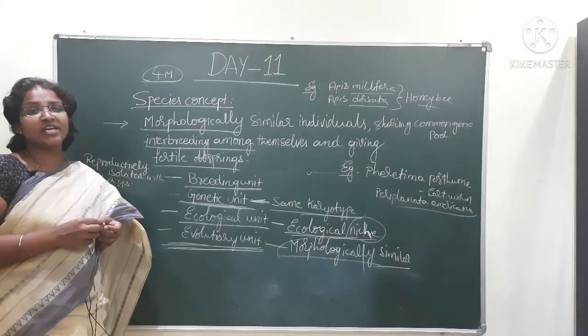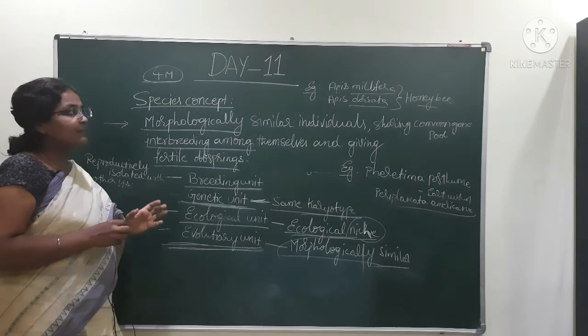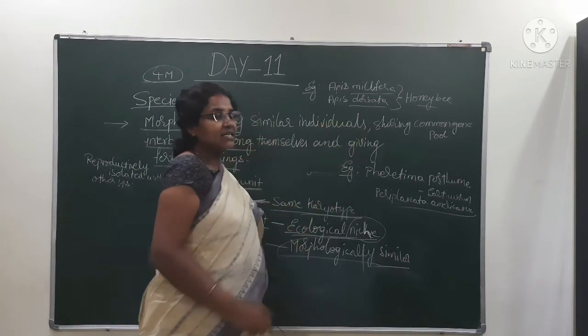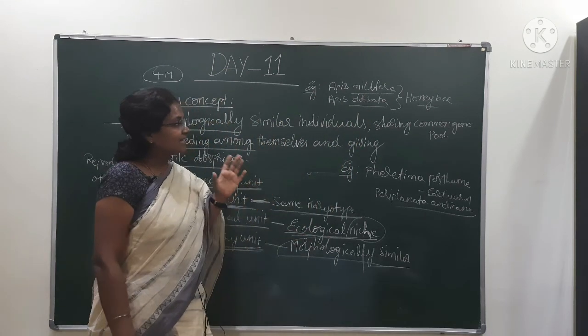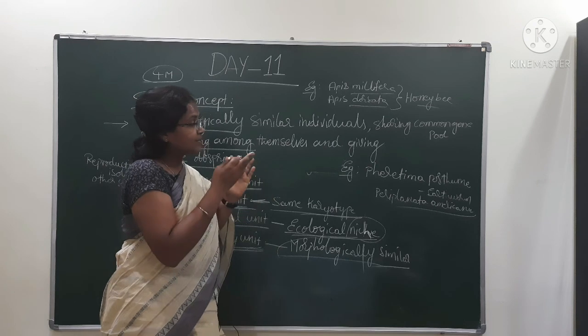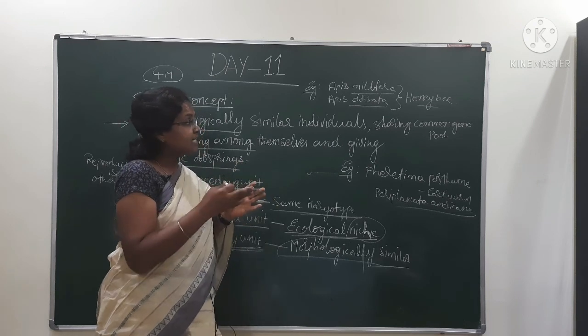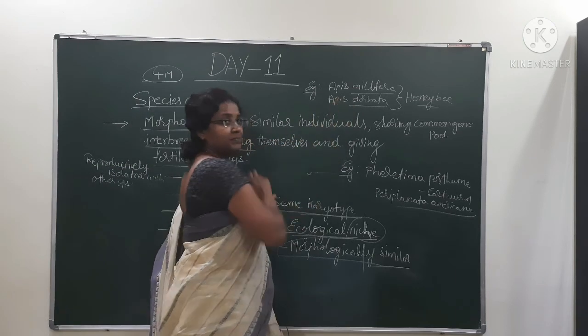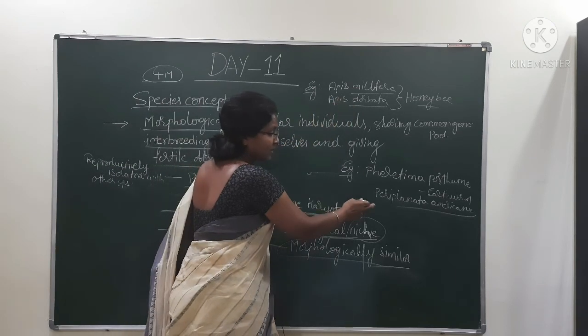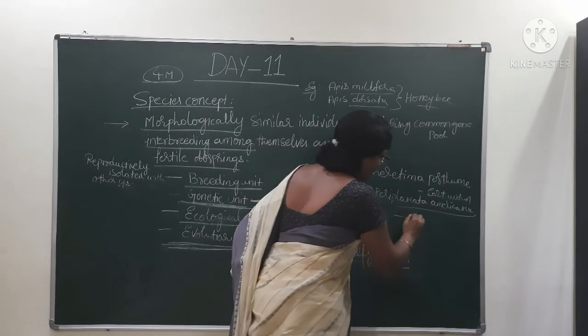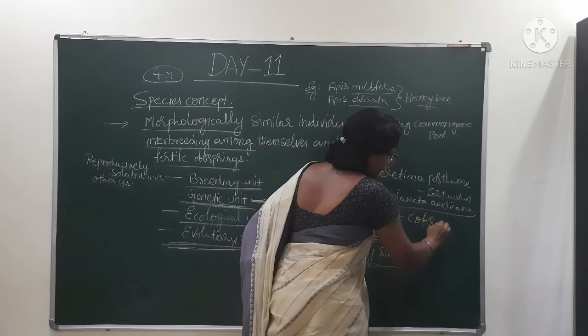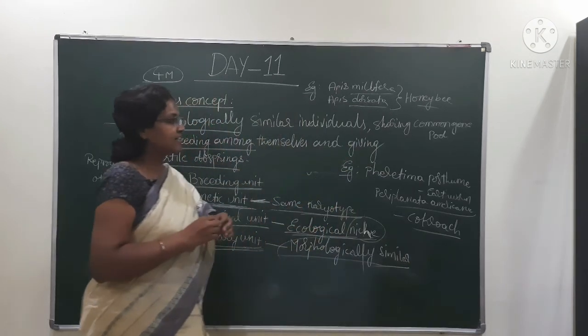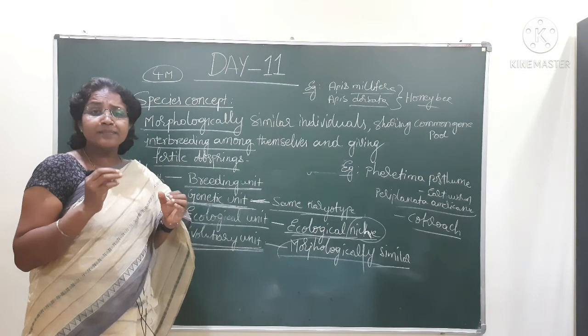For example, Apis mellifera is a honeybee and Apis dorsata is also honeybee, but these are two different species. Pheretima posthuma and Periplaneta americana - this is a cockroach. These genera and species are different.